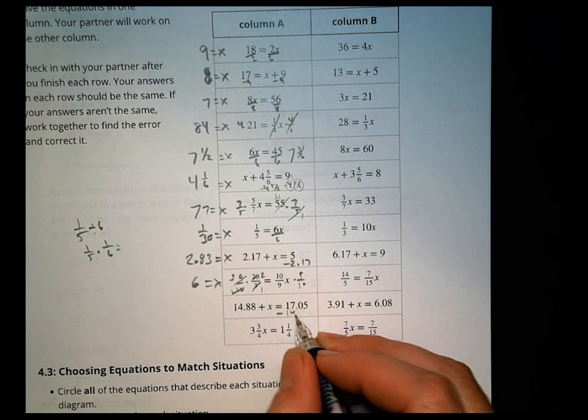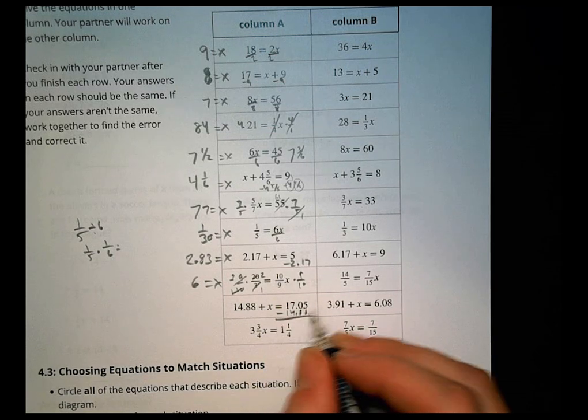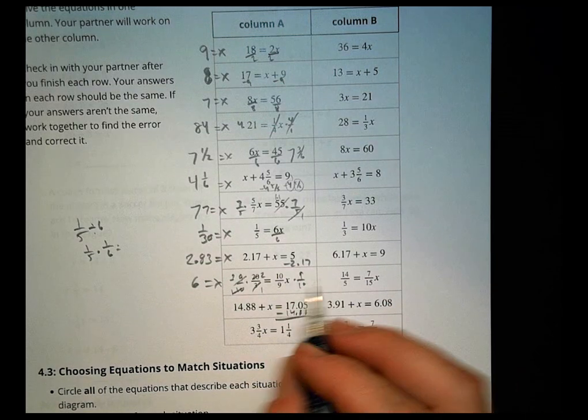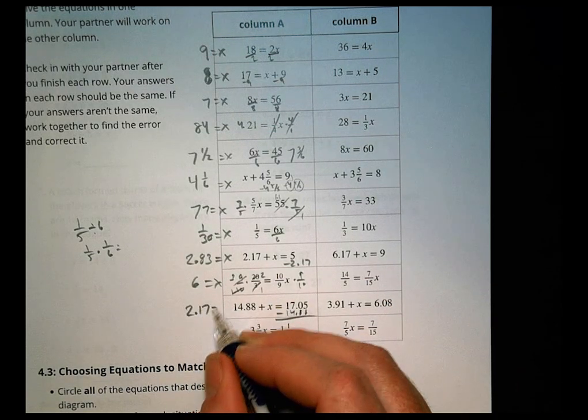This one, we're going to subtract 14.88 from both. And when you subtract 14.88, you're left with 2.17 equals x.